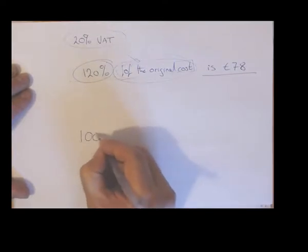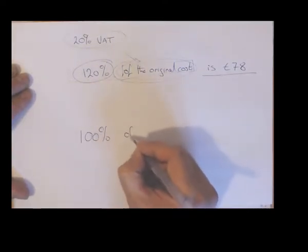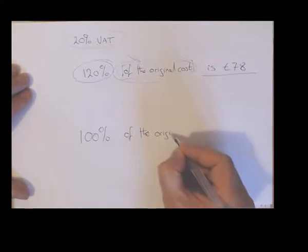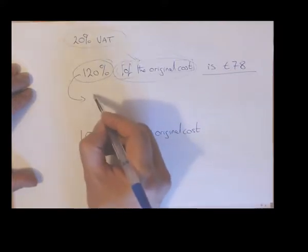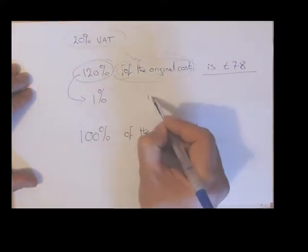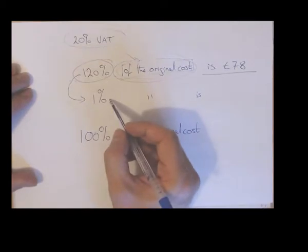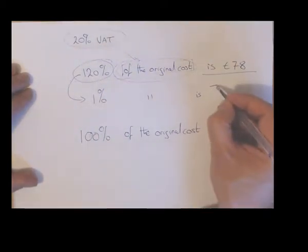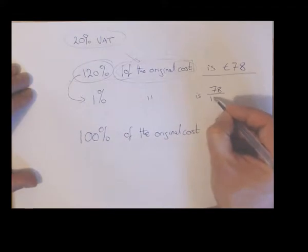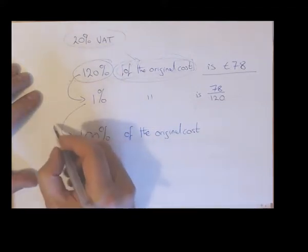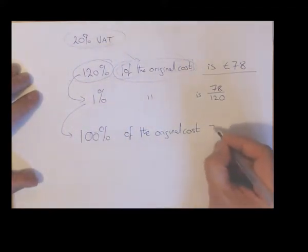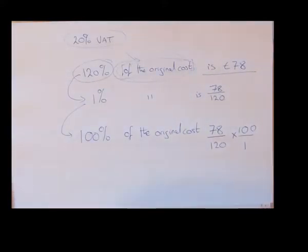We want to know what the original cost is — the original cost is of course 100% of the original cost. We use the unitary method again: 1% is obtained by making 120% a hundred and twenty times smaller, so we do the same to the right hand side. Then we scale up by 100, making it 100 times bigger on both sides. Just practice that and you'll get an idea of what you're doing.